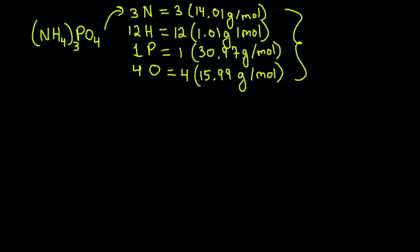Let's do another example. We've got (NH4)3PO4, ammonium phosphate. There's a three here because phosphate has a negative three charge and ammonium has a positive one charge. We've got three atoms of nitrogen, 12 atoms of hydrogen, one phosphorus and four oxygens. We multiply the coefficients, the number of atoms by the atomic mass of each element. When we add it all together, we end up with 149.08 grams per mole, the molecular mass of ammonium phosphate.